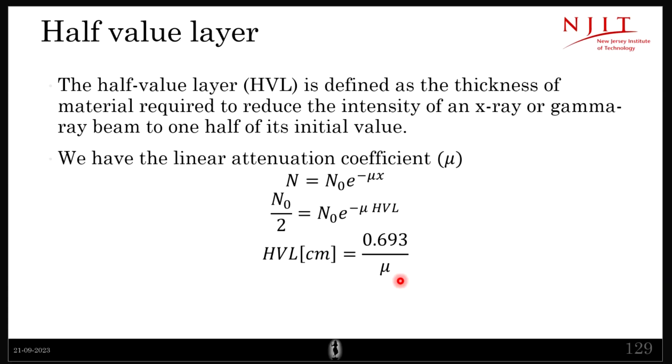Another way to put linear attenuation coefficient is a half value layer. Basically, half value layer is how much do I have to travel - what is the distance that I will have to travel in a particular material so that the intensity of the x-ray is halved.